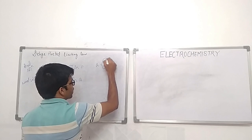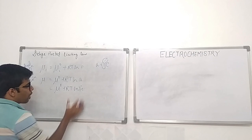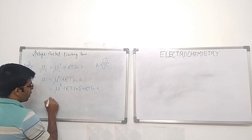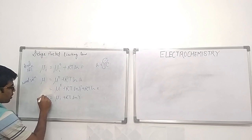We can represent the chemical potential as RT ln γ·C, which can be separated and written as RT ln γ plus RT ln C. So μ₀ plus RT ln γ can be written as μᵢ plus RT ln γ. This is the chemical potential of the real system.